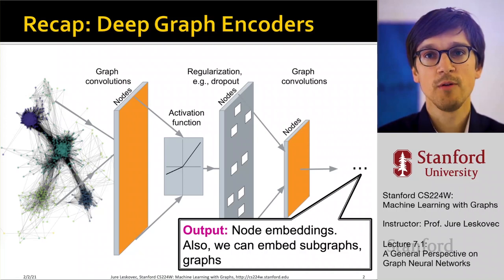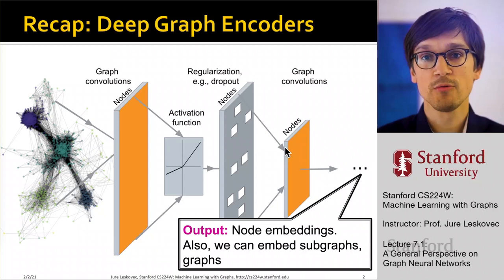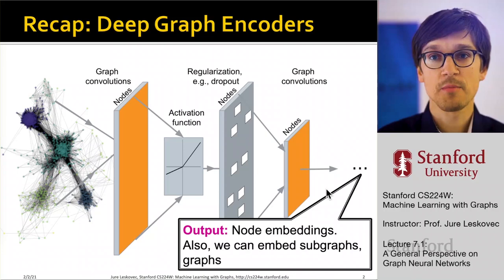So what we want is we want to build a deep graph encoder that takes the graph as the input, and then through a series of nonlinear transformations through a kind of this deep neural network comes up with a set of predictions that can be at node level, can be at the level of subgraphs, pairs of nodes, and so on.